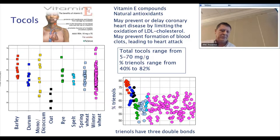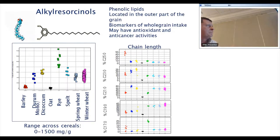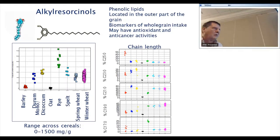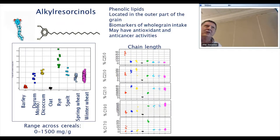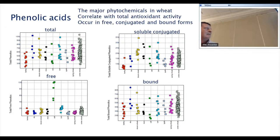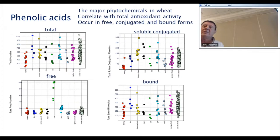Alkylresorcinols are phenolic lipids and very good biomarkers for whole grain products. Nutritionists like them because they're not metabolized — you can pick them up in the serum, so you can actually tell how much whole grain people have eaten rather than relying on food diaries. They're not present in oats, they're very high in rye, and in wheat the 150 varieties form a very tight cluster. Phenolic acids are massively variable, separated into three groups: free, bound (about 8% of total, bound to cell walls), and soluble conjugated (about 5% of total, conjugated to sugars, sterols, and other components). All forms are very variable, and wheat has a range as wide as any of the other species.